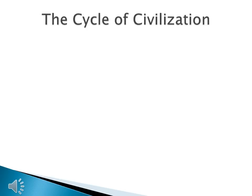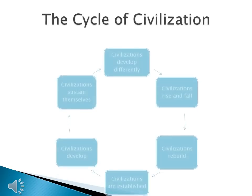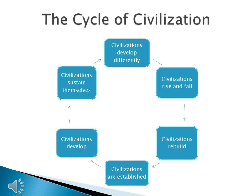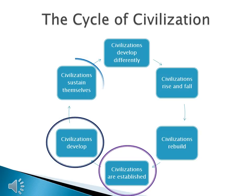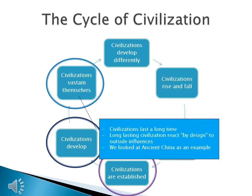Welcome to World History 1 Lecture 5.1: Introducing Greece and Greek Philosophers. Where are we now in the cycle of civilization? We learned that civilizations are established, we saw how they develop, and we explored how civilizations sustain themselves. We found out that civilizations last a long time, and that long-lasting civilizations react by design to outside influences. We looked at ancient China as a great example of this.